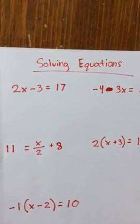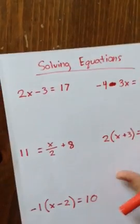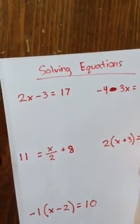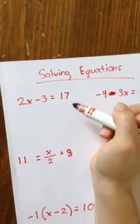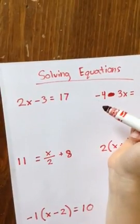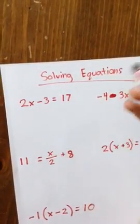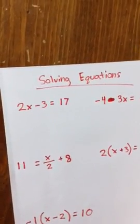All right, let's take a look at solving two-step equations. My goal in solving a two-step equation is to get x by itself on one side of the equal sign, and I'm going to do that by undoing everything that's happening to x.